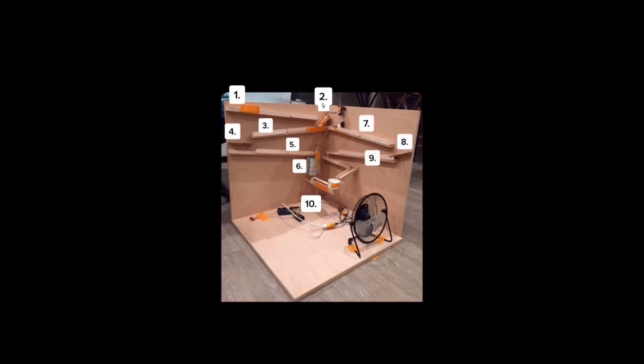Action 1 is an inclined plane. Action 2 is a lever. 3 is an inclined plane. 4 is a lever. 5 is an inclined plane. 6 is a pulley. 7 is an inclined plane. 8 is a lever. 9 is an inclined plane. 10 is an electronic to run the fan.